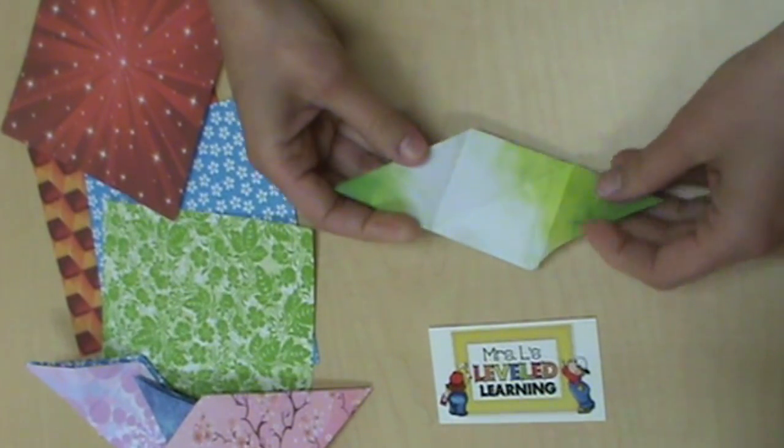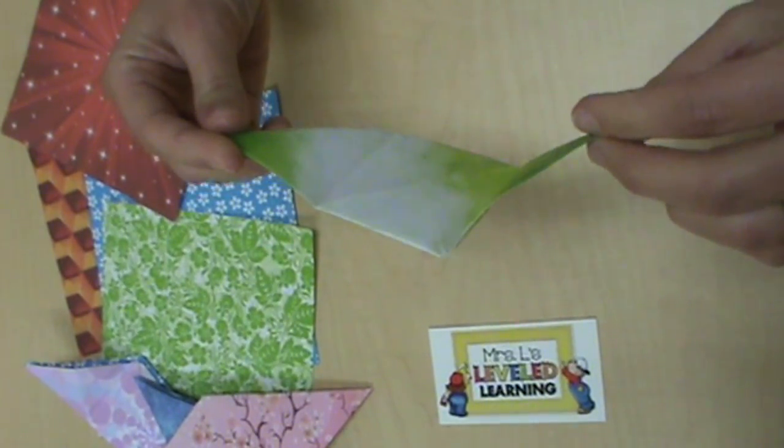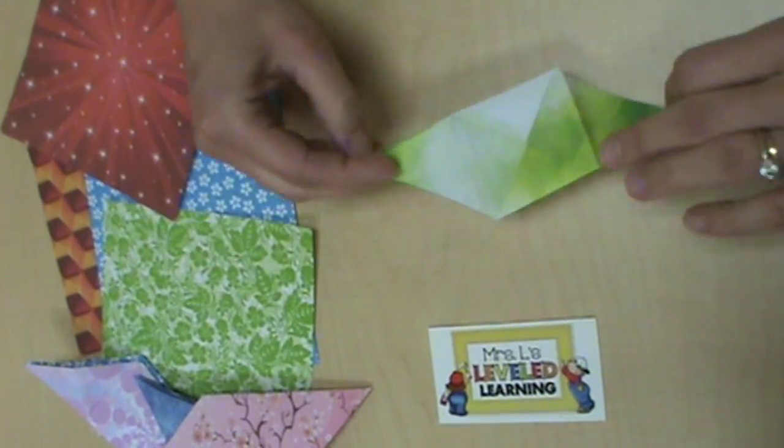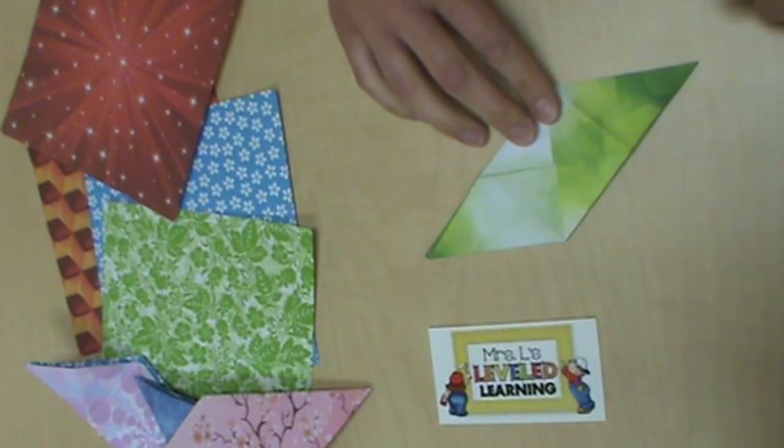The triangles will go together so that the diagonals touch. These are going to become your flaps to connect this piece to all of the other pieces.